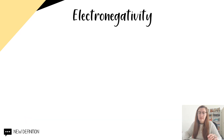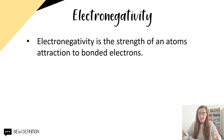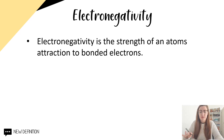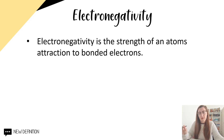Electronegativity is our new word for today, and with a new word comes a new definition. Electronegativity is the strength of an atom's attraction to bonded electrons. You'll see that on page 11, electronegativity values range between 0.8 and 4.0 — 0.8 being the lowest attraction for bonded electrons and 4.0 being the highest attraction for bonded electrons.